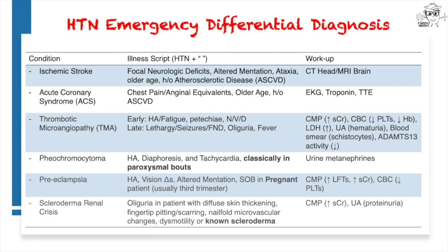Also, as scleroderma renal crisis often manifests in the first few years of diffuse scleroderma, your patient may or may not carry a prior diagnosis. So for those patients, be aware of early manifestations such as thickening of the fingers or pitting at the fingertip.